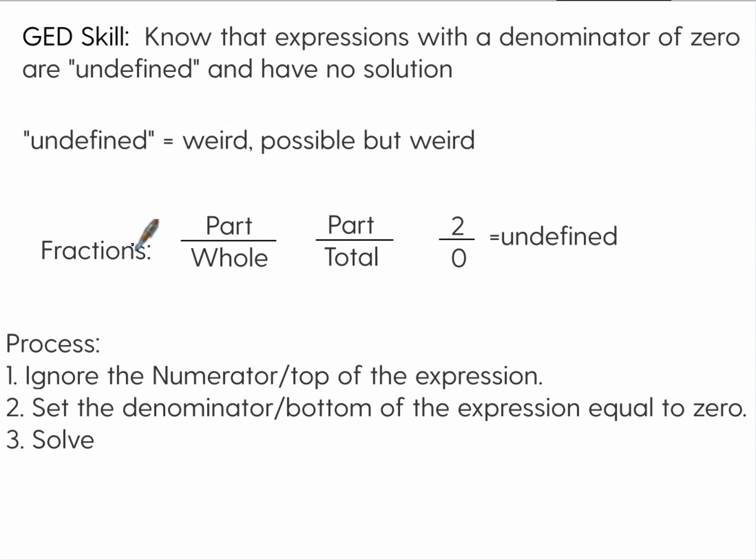So let me give you an example. Typically we're talking about fractions here. Fractions are a part over the whole or they can be equal to like a part over the total. Well when you have two parts of something but you don't have a total or the whole is zero, that's undefined. It's possible in math and we'll go over some examples. So to have two of something that doesn't add to anything is weird right. So that's undefined.